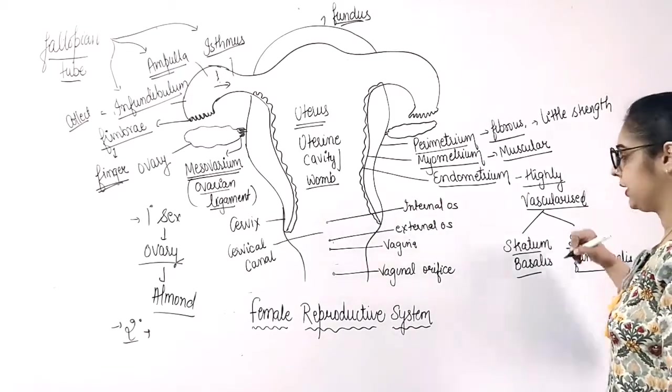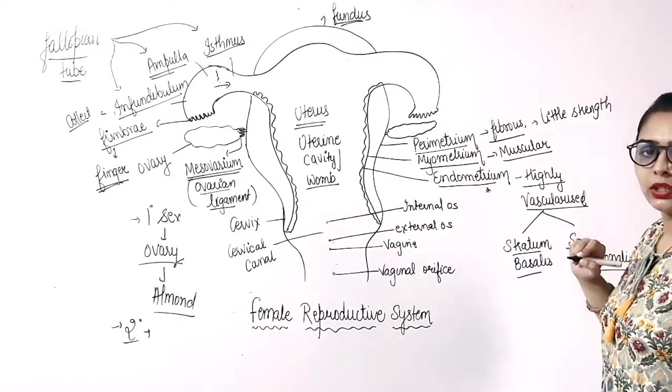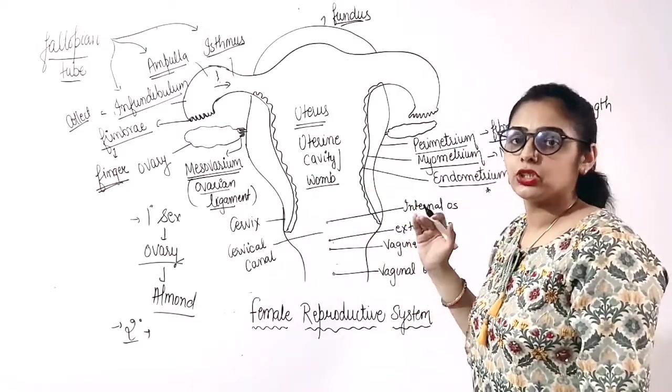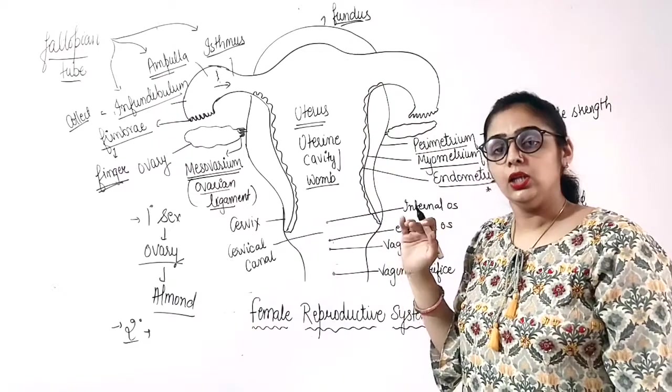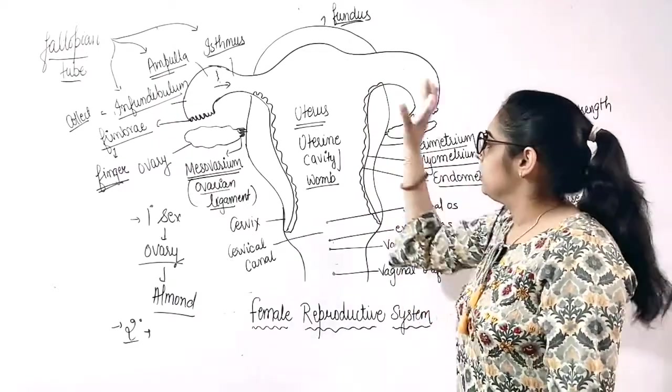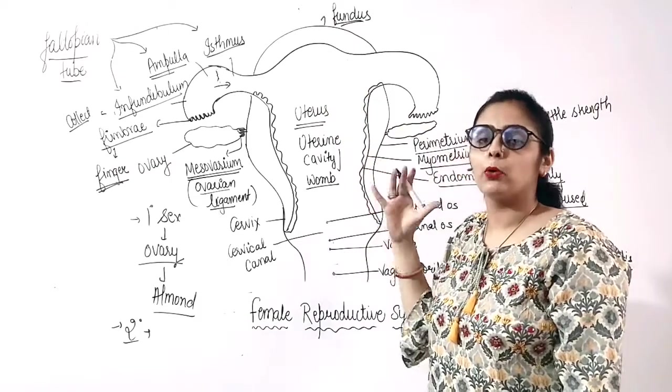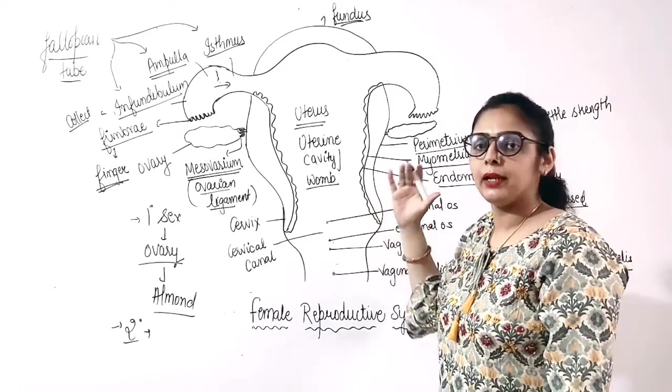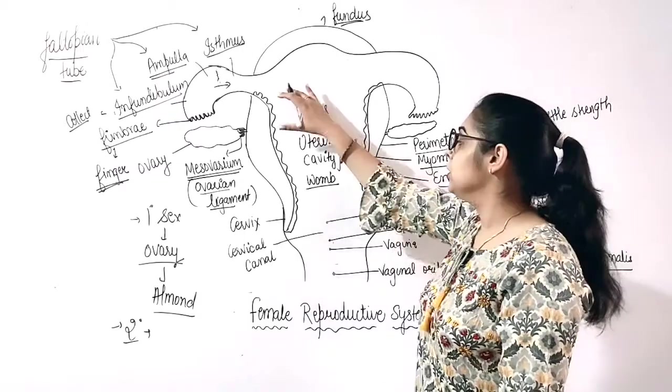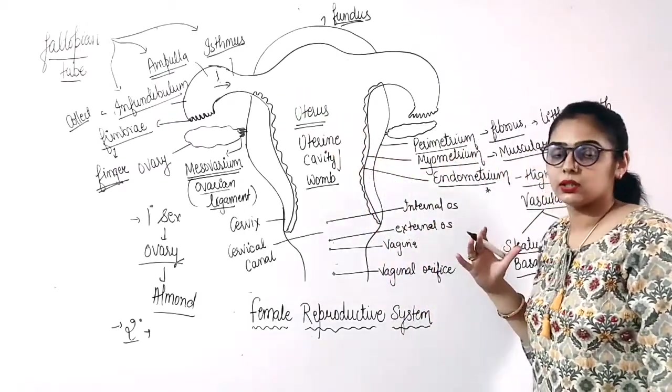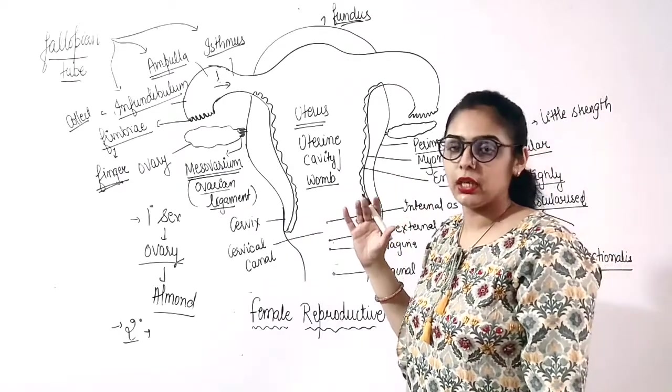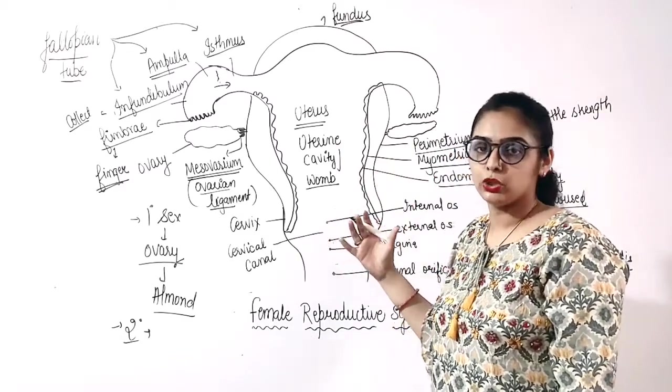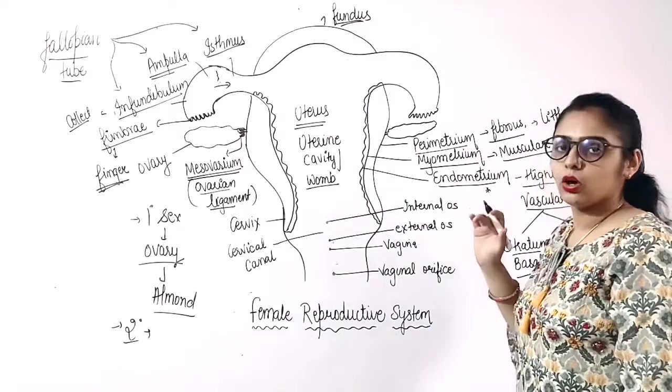These two tissues, these two layers of tissues form the endometrium. When fertilization does not occur, when a girl, when a female reaches puberty age, after that the endometrium prepares itself for pregnancy, for implantation. And if fertilization doesn't occur, then its walls, its cells are shed.